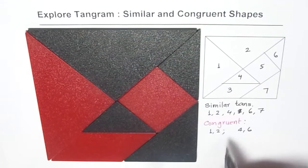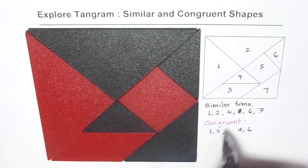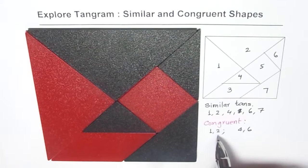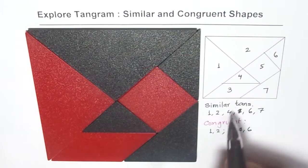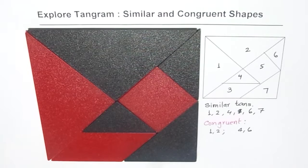So what do you also understand from here? That if the shapes are congruent, then they are also similar. They are also similar.